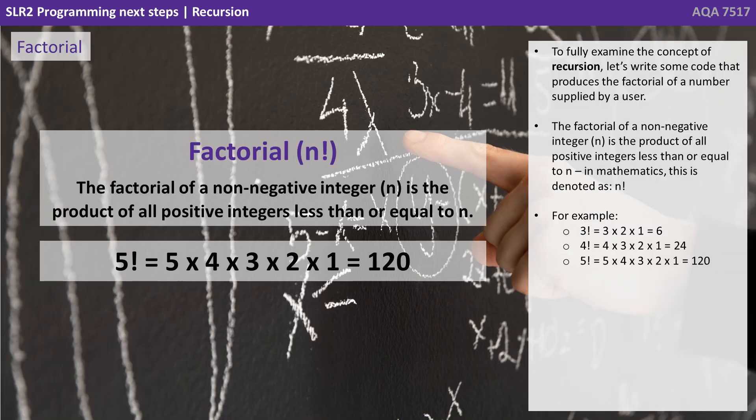To fully examine the concept of recursion, let's write some code that produces the factorial of a number supplied by a user. The factorial of a non-negative integer is the product of all positive integers less than or equal to n. In mathematics this is denoted as n exclamation mark. For example, 4 factorial would be 4 times 3 times 2 times 1, or 24.